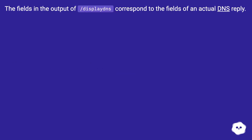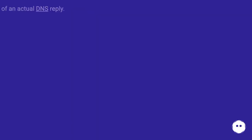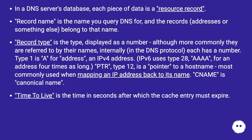The fields in the output of /displaydns correspond to the fields of an actual DNS reply. In a DNS server's database, each piece of data is a resource record. Record name is the name you query DNS for, and the record's addresses or something else belong to that name.